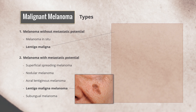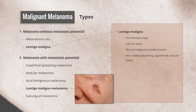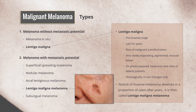Lentigo maligna is a pre-invasive stage which may last for years and has a risk of malignant transformation. It occurs as a very slowly expanding, pigmented, macular lesion, usually on photo-exposed head and neck sites of elderly patients. Histology shows in situ changes only. This phase may last for several years before a nodule of invasive melanoma develops in a proportion of cases, at which point it is termed lentigo maligna melanoma.